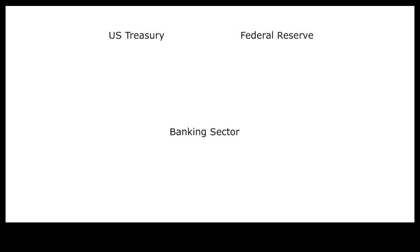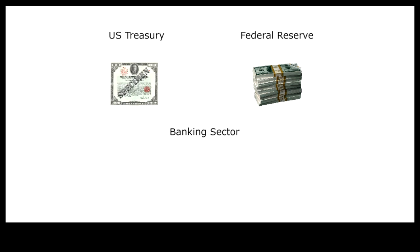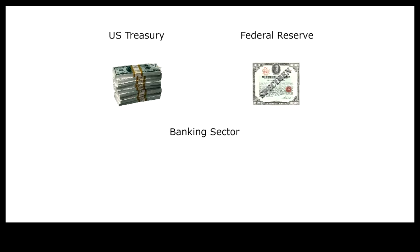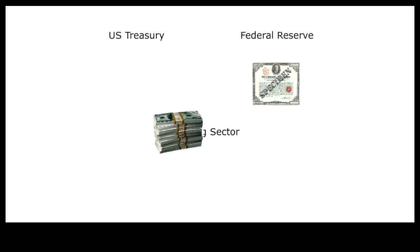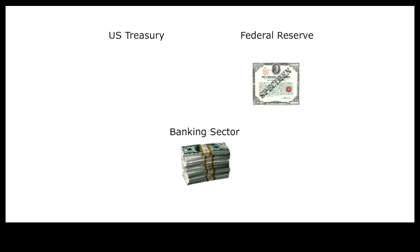Modern money is created in exchange for a promise to repay. On the federal level, the central bank prints currency notes in exchange for treasury bonds. When the currency is deposited in commercial banks, the currency can be used as reserves to greatly expand the money supply through loans.